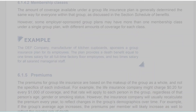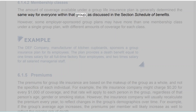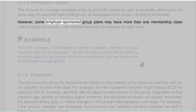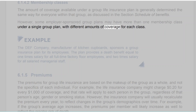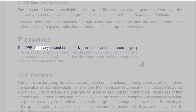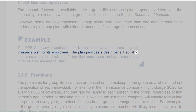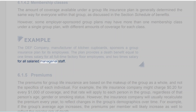6.1.4.2 Membership Classes. The amount of coverage available under a group life insurance plan is generally determined the same way for everyone within that group, as discussed in the section schedule of benefits. However, some employer-sponsored group plans may have more than one membership class under a single group plan, with different amounts of coverage for each class. Example: The DEF Company, manufacturer of kitchen cupboards, sponsors a group insurance plan for its employees. The plan provides a death benefit equal to 1x salary for all full-time factory floor employees and 2x salary for all salaried managerial staff.